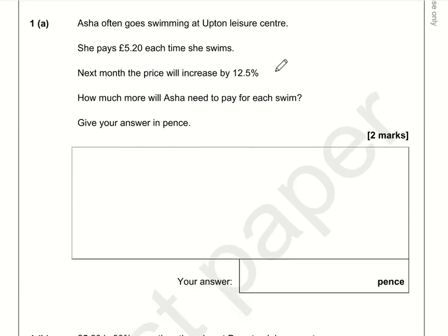Let's take a look at question number one. It says next month the price will increase by twelve and a half percent. So how much extra will Asha need to pay for the swim? We just need to work out what twelve and a half percent of £5.20 is.